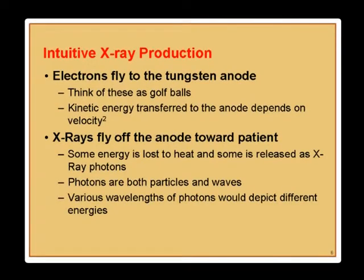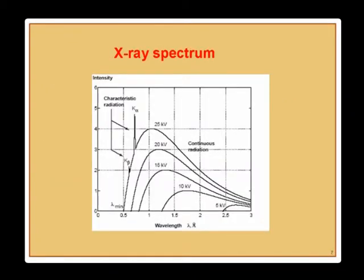Kinetic energy is transferred to the anode and much of it is lost to heat; some is released as x-ray photons of different wavelengths, depicting different energies. A typical x-ray spectrum shows a continuous spectrum and sometimes a k-edge due to k-shell electrons, which results in an increase in energies. This particular spectrum is a 25 kV spectrum, likely for a mammography application.